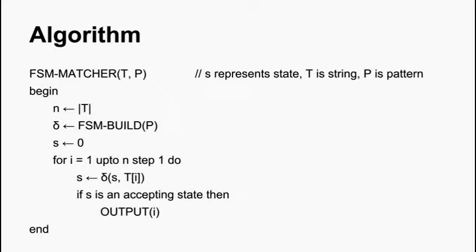Now this is the algorithm we are going to use to match. S represents the state, T the string and P the pattern. So firstly, we need to build the finite state machine, the transition function for it. And then after we have done that, we simply traverse through the finite state machine based on the input characters moving from state to state. And if we ever reach an accept state, then we output the current index. And after we have exhausted the input, then we end.